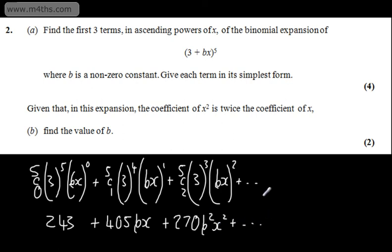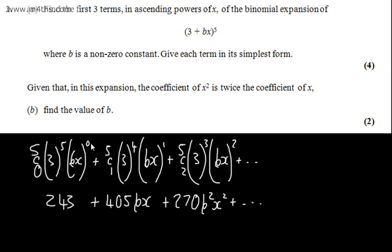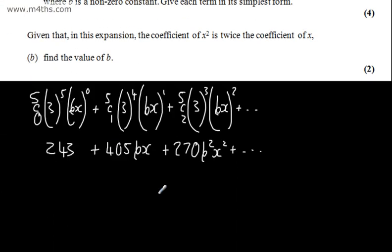So that gives me the first three terms, each in the simplest form. It says given that in this expansion, the coefficient of x squared is twice the coefficient of x. For two marks in part b, find the value of b. We're told b is a non-zero constant.